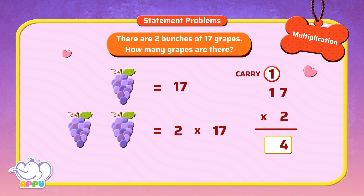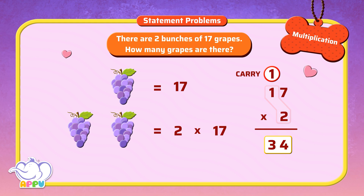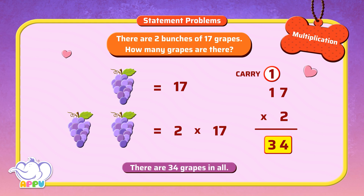Step 2: multiply 2 with the 10's digit. 2 times 1 equals 2. We add the carry over, so 2 plus 1 equals 3. So the answer is 34. There are 34 grapes in all.